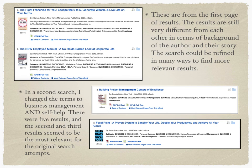These are from the first page of results. The results are still very different from each other in terms of the background of the author and the story told in the e-book. The search could be refined in many ways to find more relevant results. In my second search attempt, I changed the terms to 'business management AND self-help.' I also tried 'business owner AND self-help' and 'business ownership AND self-help,' but I did not obtain more than one result in both of those searches. There were five results for 'business management AND self-help,' and the second and third results seemed to be the most relevant for the patron's desired books.